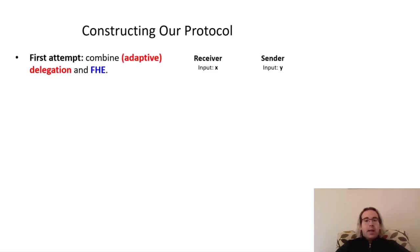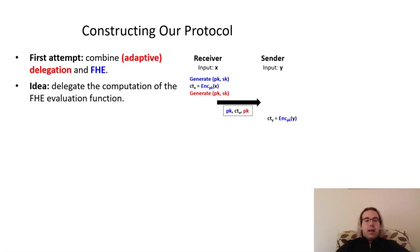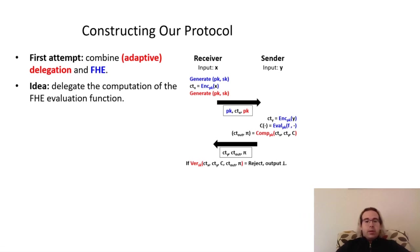Let's begin by naively combining FHE and delegation. The high-level idea is to delegate the computation of the homomorphic evaluation used to generate the output ciphertext. Here, I'll highlight the FHE steps in blue and the delegation steps in red for clarity. First, the receiver generates the keys for both the FHE and delegation and encrypts its input using FHE, and sends the ciphertext and public keys to the sender. The sender encrypts its own input and uses the delegation protocol along with the two input ciphertexts to generate the homomorphically evaluated output ciphertext and a proof of its correctness. The sender then sends the proof and its input and output ciphertexts to the receiver, who verifies the sender's computation using the delegation protocol, rejects if it doesn't verify, and decrypts and returns the output otherwise.